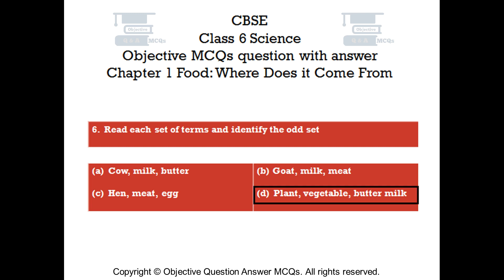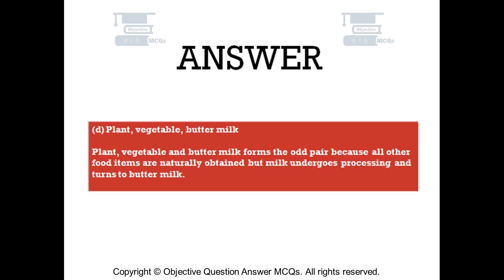The right answer is Option D — Plant, vegetable, butter, milk. Plant, vegetable, and buttermilk form the odd group because all other food items are naturally obtained, but milk undergoes processing and turns into buttermilk.